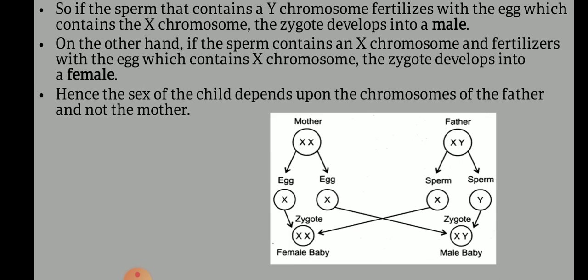Here is a pictorial description. The mother has two X chromosomes and the father has X and Y chromosomes. If X from the mother's egg fertilizes with X from the father's sperm, it is a female baby. If X from the mother fertilizes with Y from the father, the resulting zygote contains XY chromosomes and it will be a male baby.